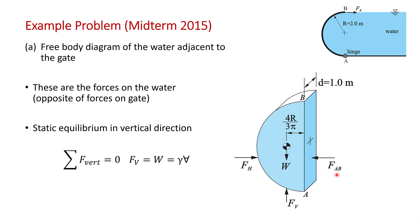If we do a static equilibrium in the vertical direction, sum of the forces in the vertical direction equals zero because it's not moving. We can see that the vertical force is just equal to the weight of the water. And we've got the line of action here from our textbook. The weight of the water is gamma times the volume. This is a unit depth into the page.